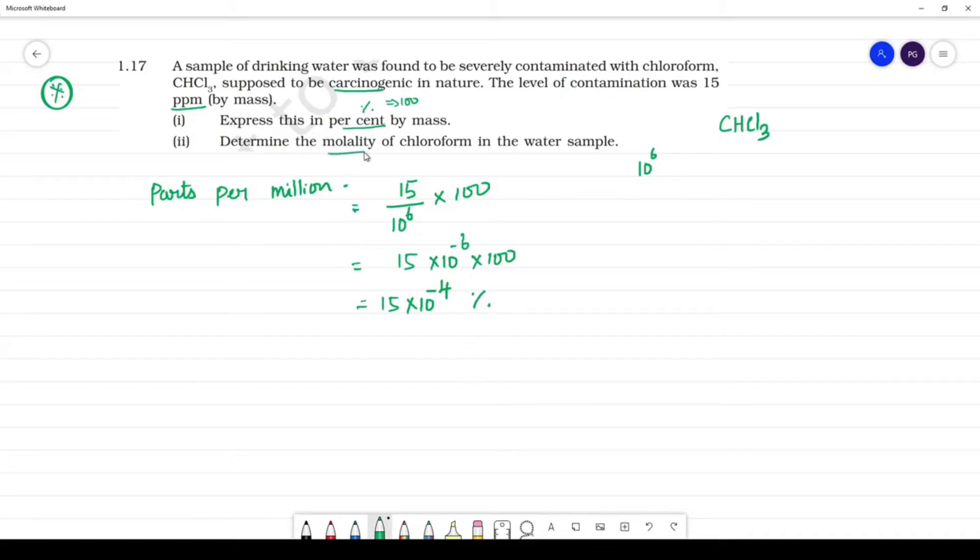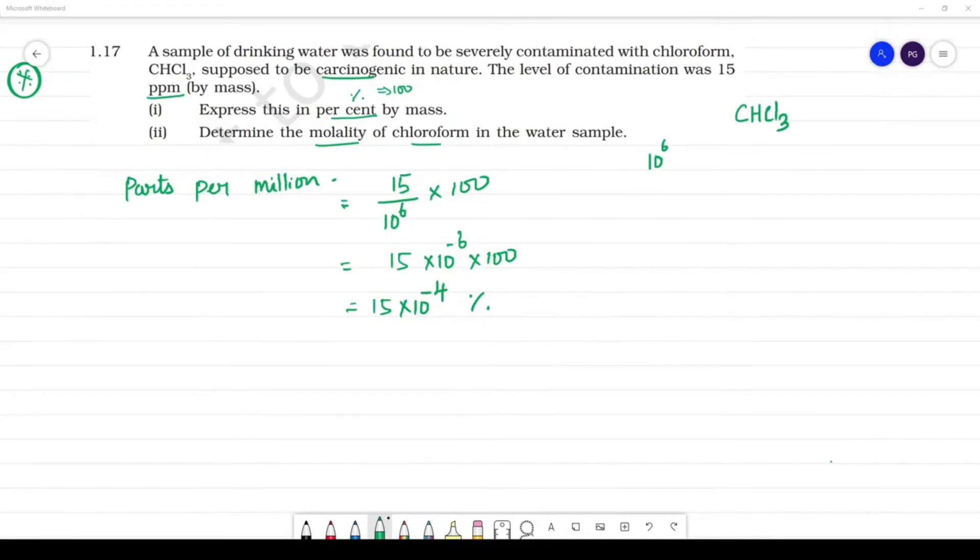Next. Determine the molality of chloroform in water sample. So molality. Molality formula: number of moles of solute by mass of solvent in kg. Mass of solvent in kg.